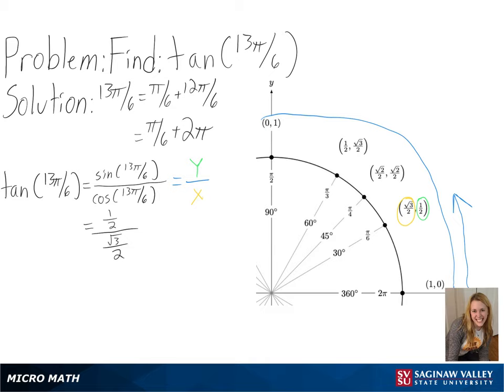So we will get 1/2 over the square root of 3 over 2, and then multiplying by the reciprocal, we get 1 over the square root of 3, or the square root of 3 over 3 as our final answer.